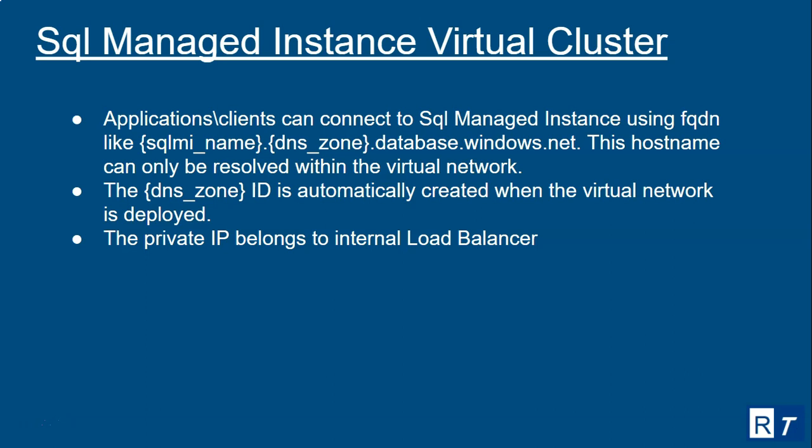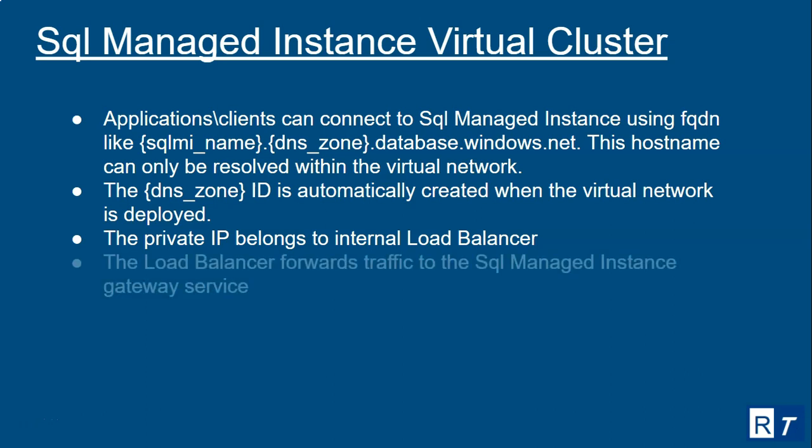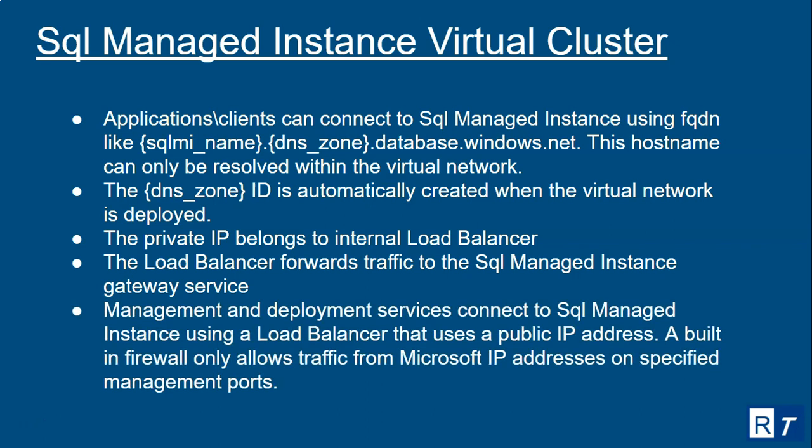The private IP belongs to an internal load balancer. When applications connect to the managed instance, they connect to this internal load balancer. Multiple managed instances can be placed behind it — how many depends on the subnet IP ranges. Based on the instance name, the load balancer redirects traffic to the SQL Managed Instance gateway service, which handles security, validation, login, and firewall checks before routing to the specific instance.